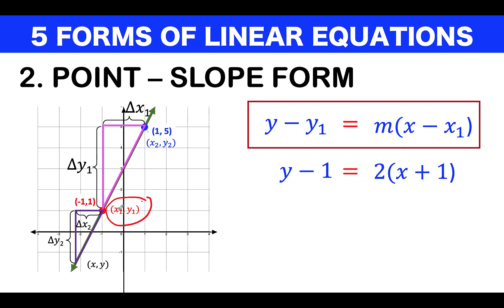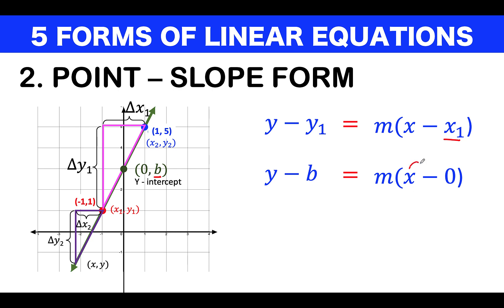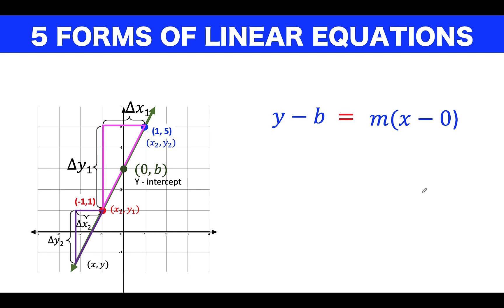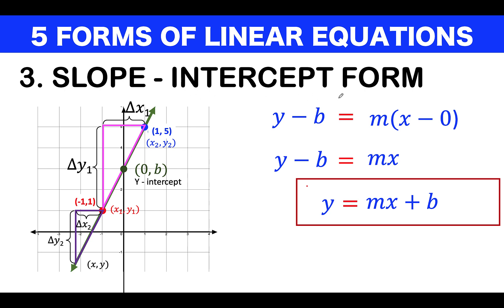A special case occurs when the point (x₁, y₁) is the y-intercept — the intersection between the y-axis and the line. At the y-intercept, x is always 0 and y can be any real number. So we let y₁ = b and x₁ = 0. Substituting, we get y − b = m(x − 0), which simplifies to y = mx + b. This resulting form is called the slope-intercept form of the line.